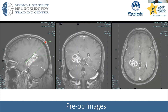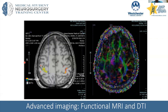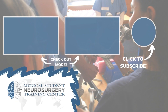This example highlights the thought process behind tumor resections and the importance of imaging adjuncts. One such adjunct is functional MRI: the patient is in the scanner and asked to perform a task like squeezing a ball or moving their hand. We know the motor strip receives increased blood flow and oxygen during movement, which can be detected on functional MRI. This provides a cortical representation of hand movement, helping surgeons plan their approach.